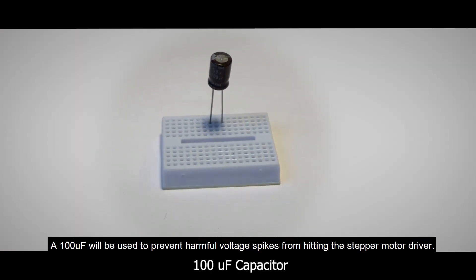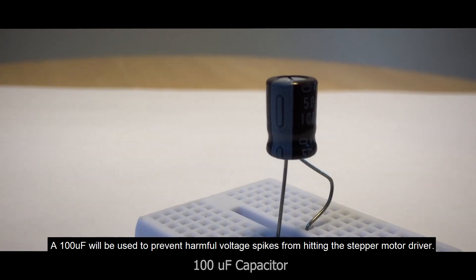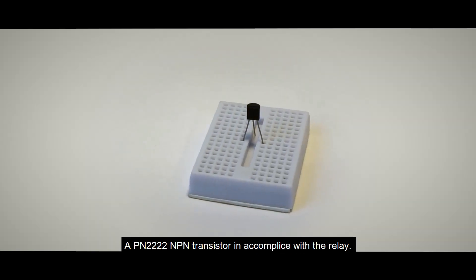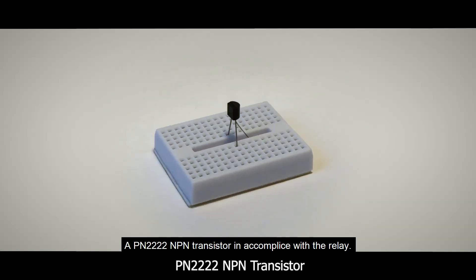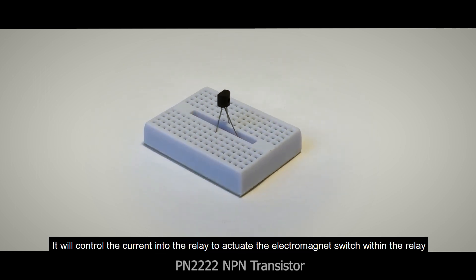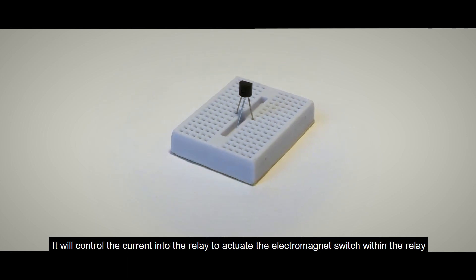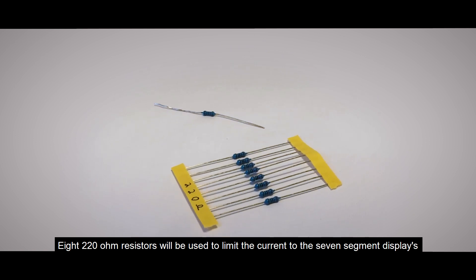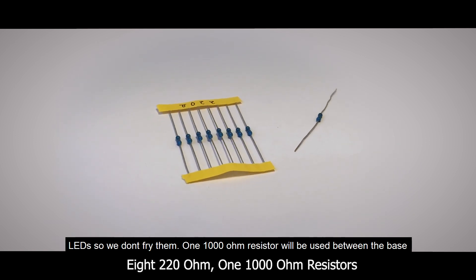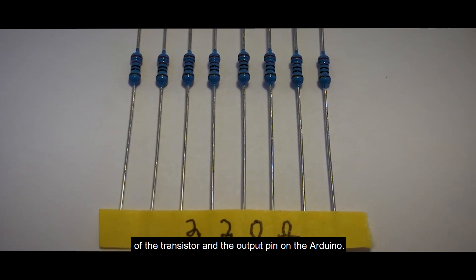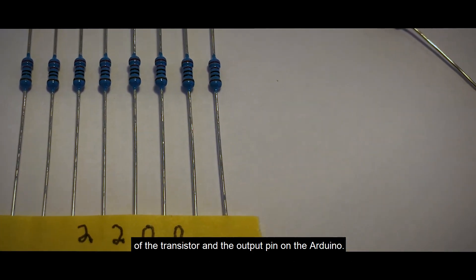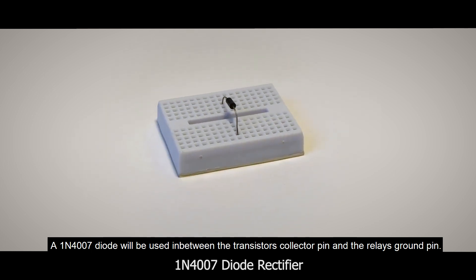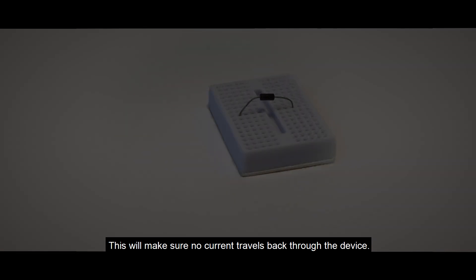A 100 microfarad capacitor will be used to prevent harmful voltage spikes from hitting the stepper motor driver. A PN2222 NPN transistor will be used in accomplice with the relay. It will control the current into the relay to actuate the electromagnet switch within the relay, allowing current to flow through. Eight 220 ohm resistors will be used to limit the current to the seven-segment display's LEDs so we don't fry them. One 1000 ohm resistor will be used between the base of the transistor and the output pin on the Arduino. A 1N4007 diode will be used in between the transistor's collector pin and the relay's ground pin. This will make sure no current travels back through the device.